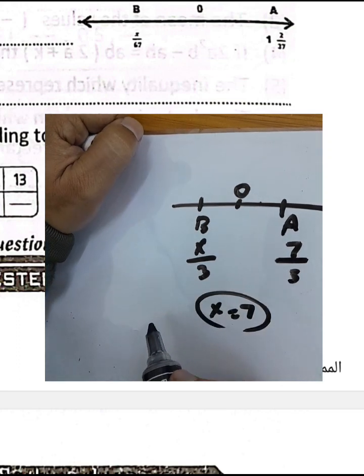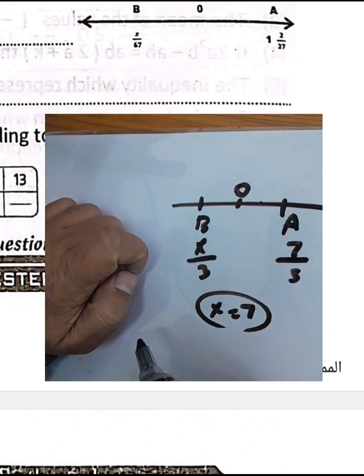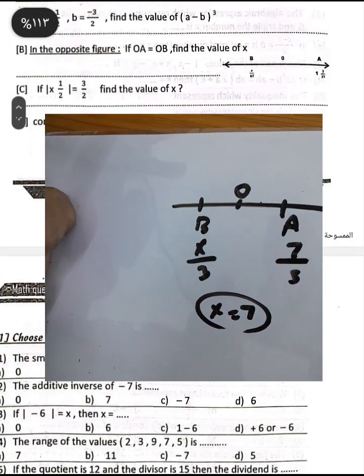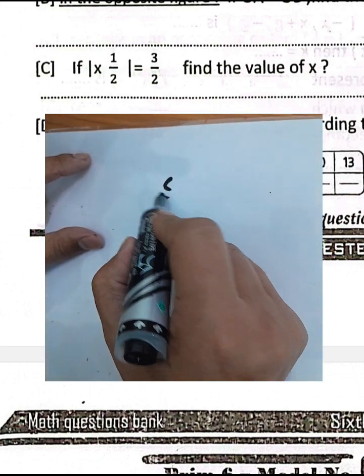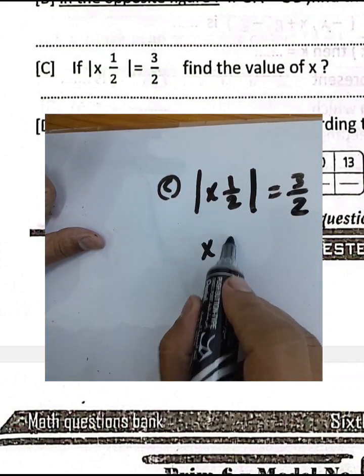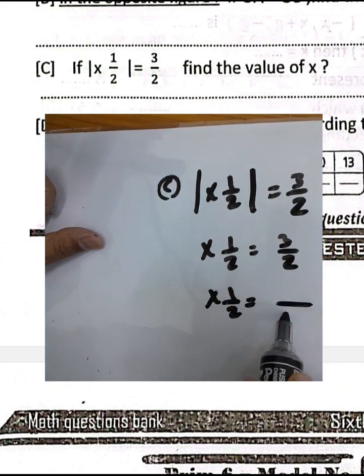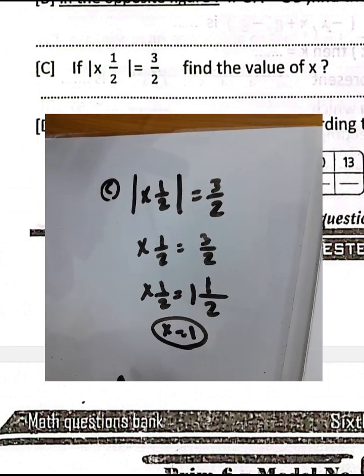If x lies on the left-hand side of a number line, it will be negative. For example, if the absolute value of x plus one half equals 3 over 2, then x plus one half equals 3 over 2, and converting gives x equals 1.